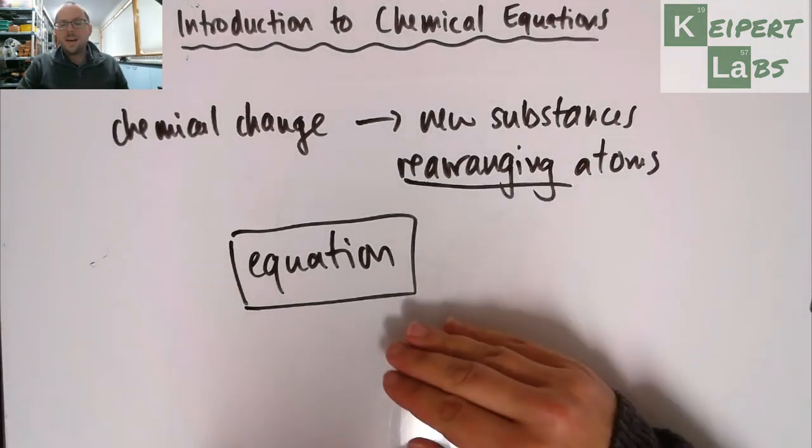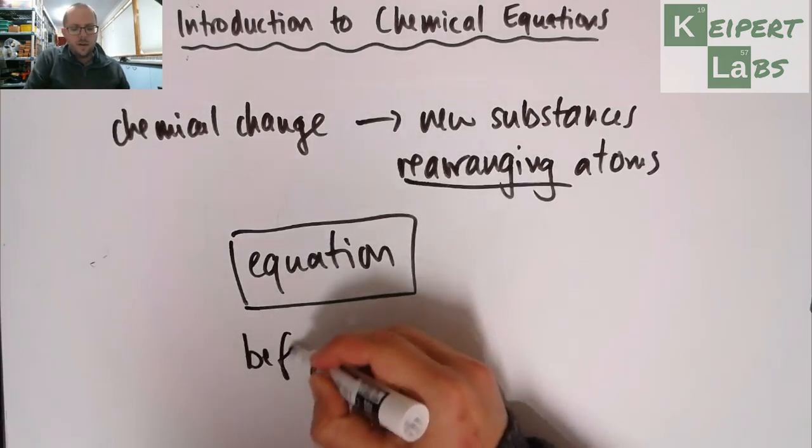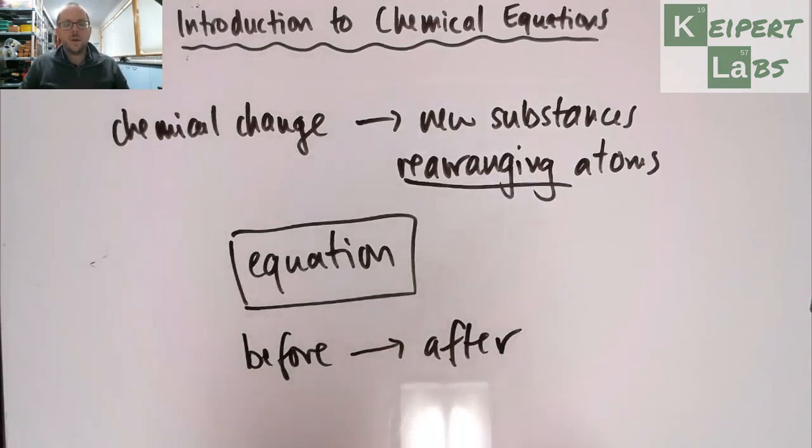So when we have a chemical equation, we're representing the changing process. We're going from before to after. So there's a couple of things that we're going to see in your typical chemical equation.